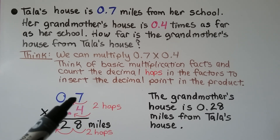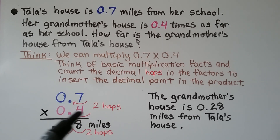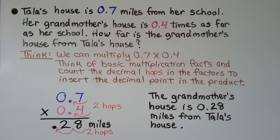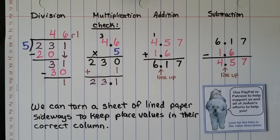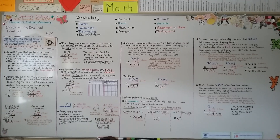Make sure however many decimal place value hops are total in the factors will be the amount in the product. We can turn a sheet of lined paper sideways to keep place values in the correct column. If you click the description, you'll see a link to PayPal and Patreon to help support me and my dogs. That was our last lesson for chapter 4. We're going to do chapter 5 next, which is all about dividing decimals. I hope I'll see you there. Bye!